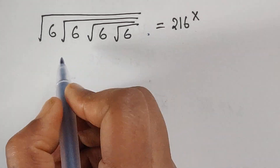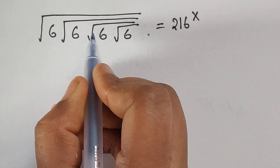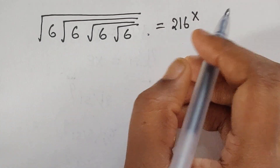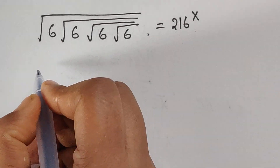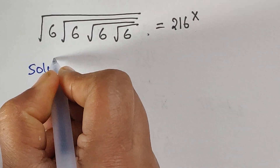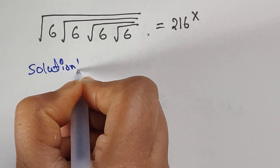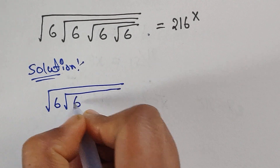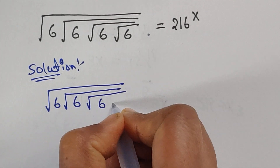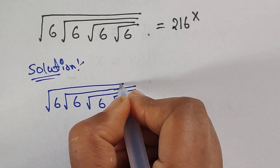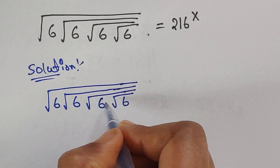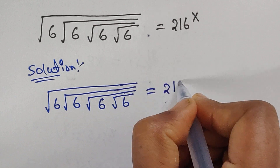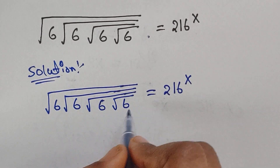Hello everyone, welcome back to our channel. Here we have one problem: square root of 6, square root of 6, square root of 6, square root of 6, equals 216 to the power of x. We have four nested square roots. So how do we solve this problem? Let's see the solution.